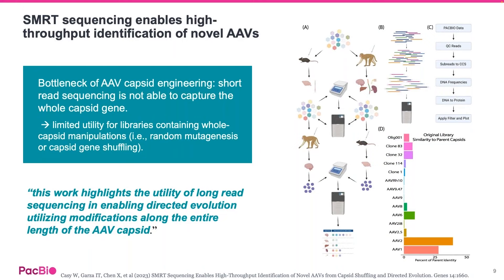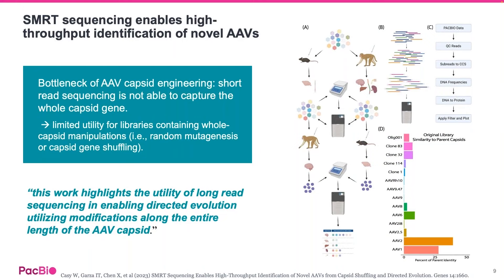You can use HiFi reads along the whole development process of your AAV vector, ranging from capsid discovery through vector design to evaluation of your AAV vector preparation. A recent study used PacBio HiFi sequencing to screen for and identify novel AAV capsids. The team around Stephen Gray from UT Southwestern used an amplicon-based approach to sequence the full-length cap gene in their AAV libraries to find novel capsids that function across species and are specific to target tissues such as the CNS. They point out that this work highlights the utility of long-read sequencing for capsid discovery.